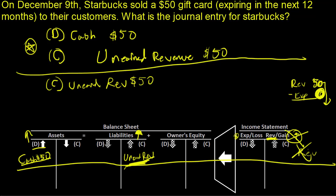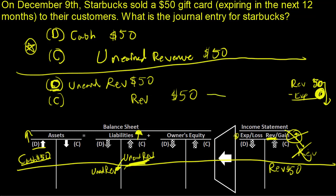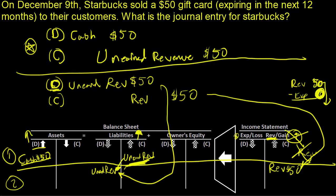That unearned revenue would be a debit — I wrote it as a credit but it's a debit, I wrote it in the right spot but the wrong letter. So unearned revenue is a debit, and what we're doing is showing that this revenue is becoming earned. The credit to that is actually revenue of $50 when that happens. In this second period, the unearned revenue and revenue correspond to each other, and when we're making the coffee we'll have all the expenses associated with the baristas and coffee beans, so we get an accurate count of what the net income is.